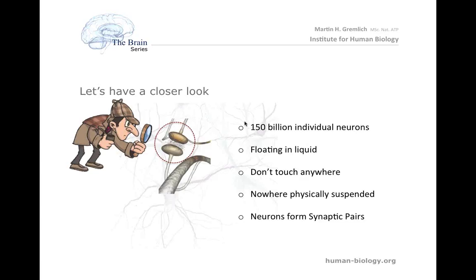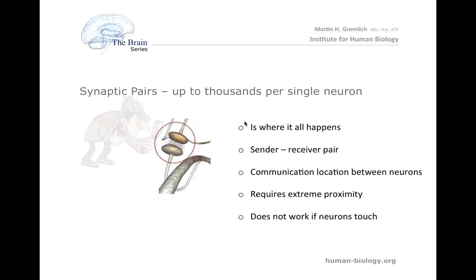This is very important to remember to understand what brain injury actually is. The synaptic pairs — where two neurons get close together but don't touch — is where it all happens. It's a pair of senders and receivers exchanging communication, very much like a pair of speakers or microphones. The communication location is the synapse, no other part. Synapses require extreme proximity but must never touch. So again: neurons float freely, individually, in liquid.